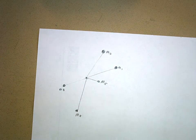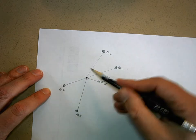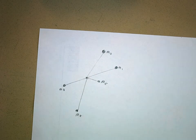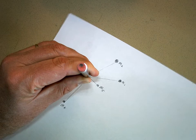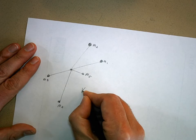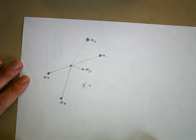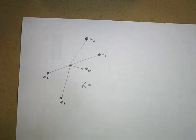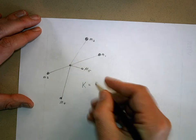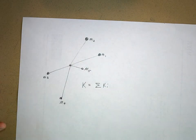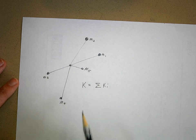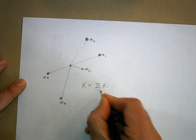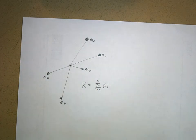We attach these particles with massless rods — or glue them to a massless piece of paper — and rotate the whole system. What's the total kinetic energy of this system? It's just the sum of the kinetic energies of each individual particle: KE_total = Σ (½mᵢvᵢ²). We sum from i = 1 to n for any number of particles.